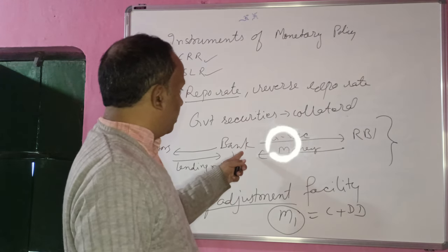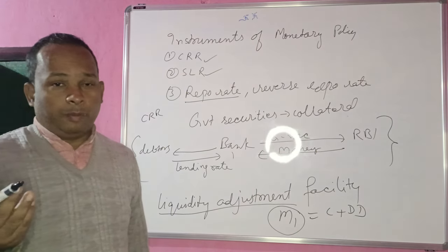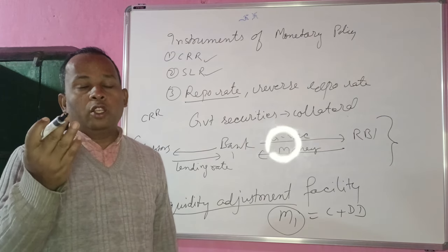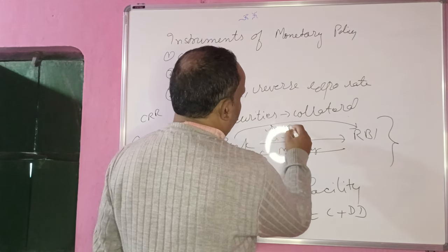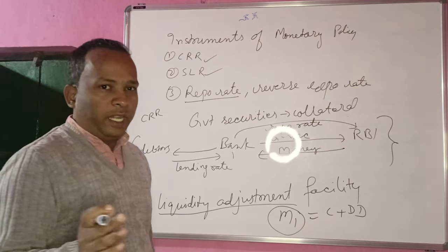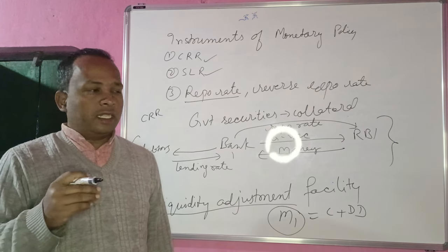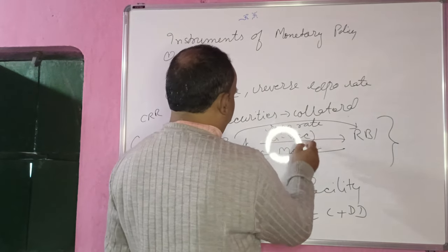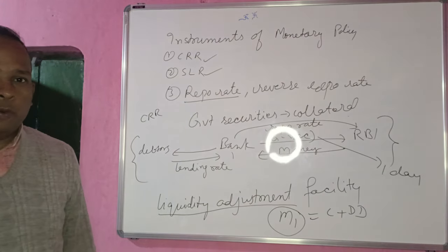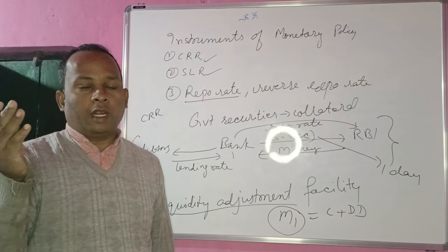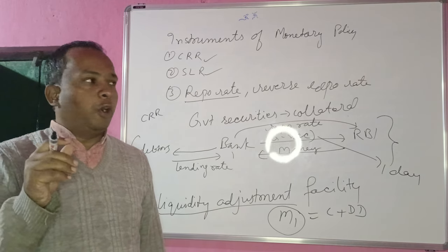RBI gets government securities from the bank and in return the bank gets money from RBI. Obviously, banks pay interest on that money, which is called the repo rate. The repo rate is the interest rate paid by banks to RBI for getting cash. When government securities are pledged for one day, this is called an overnight repo transaction, and it happens at an interest rate called the policy rate.